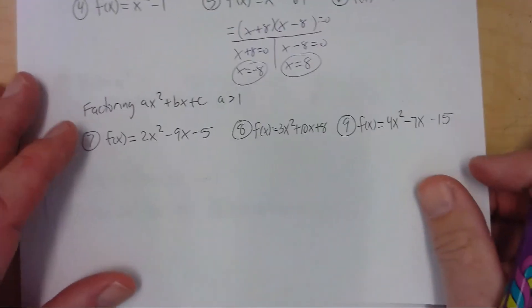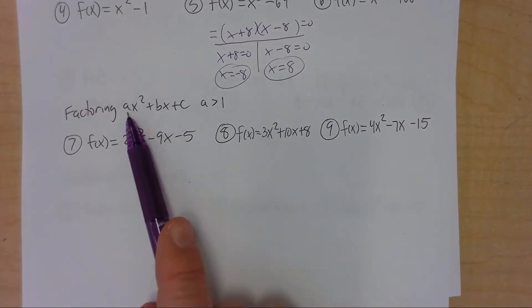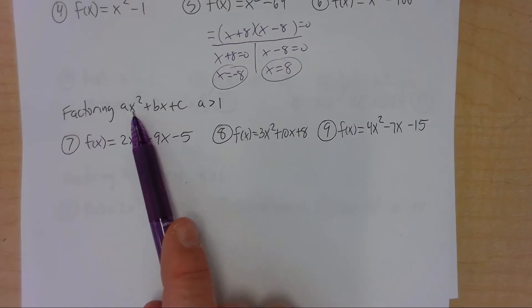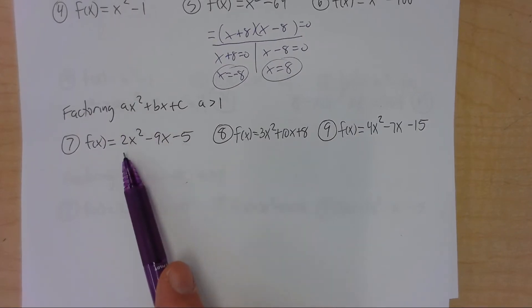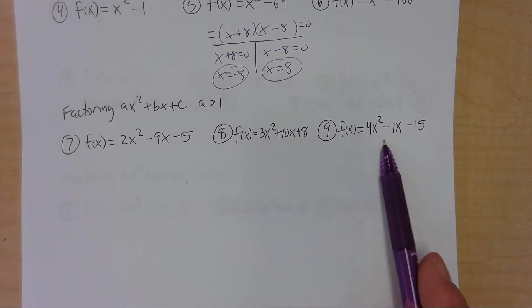The ones on the bottom are kind of like what we did the other day when we did the factoring worksheet, but I added on a number in front besides just x squared. It's now some number x squared. So 2x squared, 3x squared, 4x squared, anything like that.